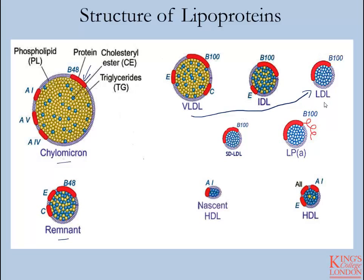LDL, if it's not removed from circulation by the liver, can be further delipidated and compacted into small dense LDL, which is a very atherogenic particle. As well, the ApoB100 moiety can be modified with additional protein tags, producing lipoprotein A, which is a derivative of LDL.